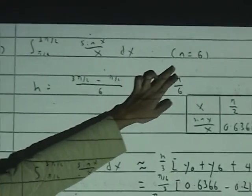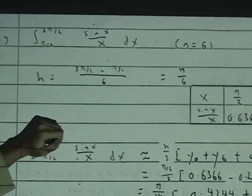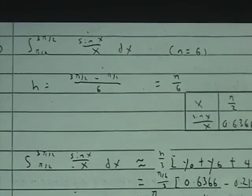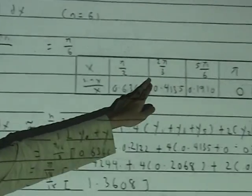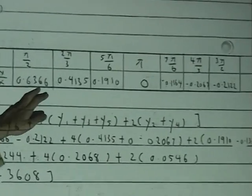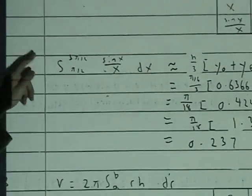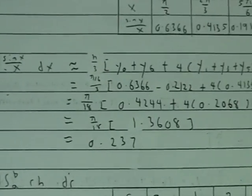It's given that n equals to 6, so we find h, b minus a over 6, you get h. Then you substitute all these values into the equation, you've got your table. Then you apply those numbers into the Simpson's rule, and you get 0.237.